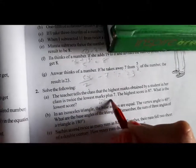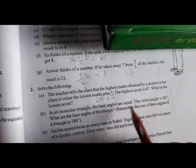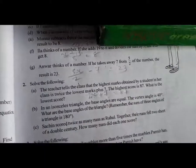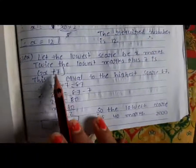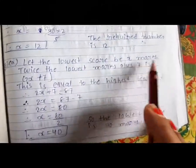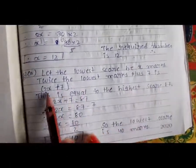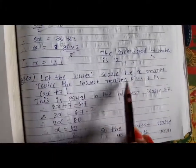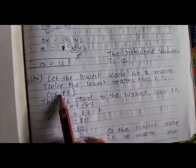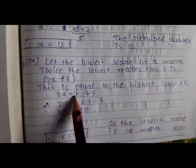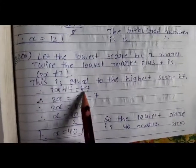So, the highest score is 87. Let the lowest mark be X. Then twice the lowest mark plus 7 equals the highest score: 2X plus 7 is equal to 87.